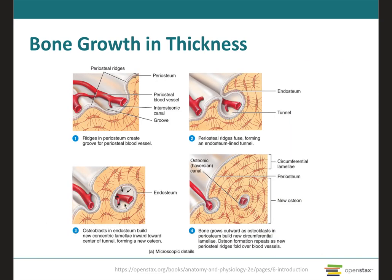Like cartilage, bone can grow in thickness — meaning in diameter — only by appositional growth. In the first step, at the bone surface, periosteal cells differentiate into osteoblasts, which secrete collagen fibers and other organic molecules that form the bone extracellular matrix. The osteoblasts become surrounded by the extracellular matrix and develop into osteocytes. This process forms bone ridges on either side of a periosteal blood vessel, and these ridges slowly enlarge, creating a groove for the periosteal blood vessel.